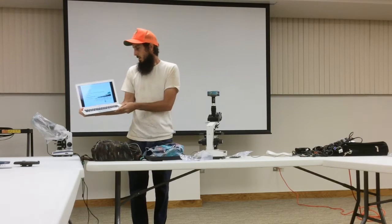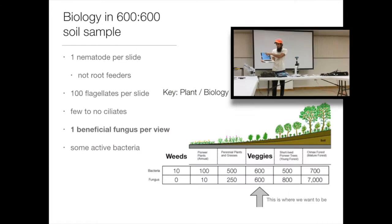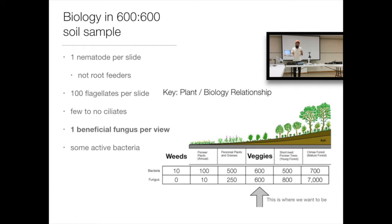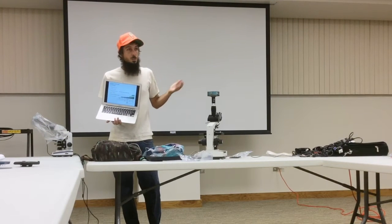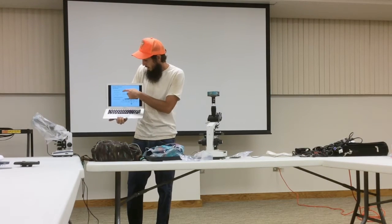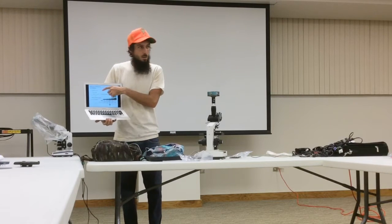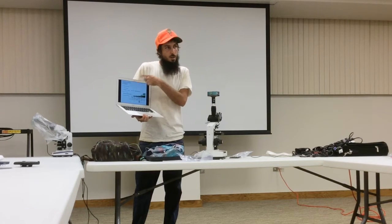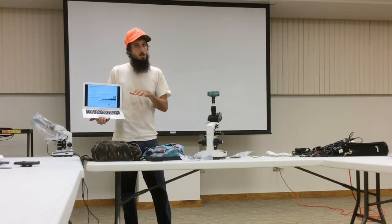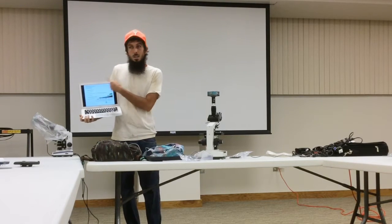This next slide describes biology in a 600 to 600 soil sample — meaning 600 micrograms of bacteria and 600 micrograms of fungus per gram of soil. That's the ideal condition for most of the crops we're growing. If we're growing taro, sweet potatoes, cassava, or climbing trees, that's the range we want to be in. What I have written here is what you should see on a slide if you're balanced at 600 to 600.